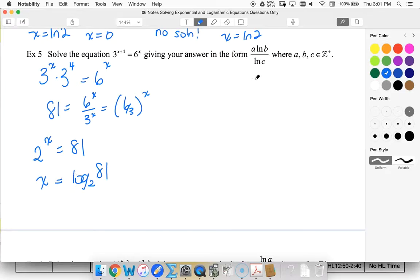Alright, I want ln, so I'm going to use change of base. That's going to give me ln of 81 over ln of 2. But I want it in this form to have an a there. I must have originally had a power. So, I'm going to take this back to its 3 to the 4th, and I'm going to bring my 4 down.